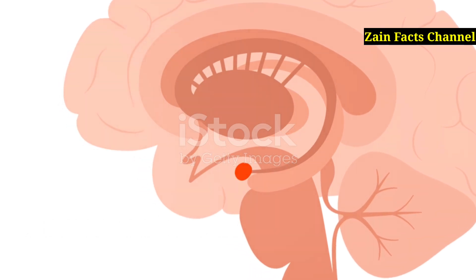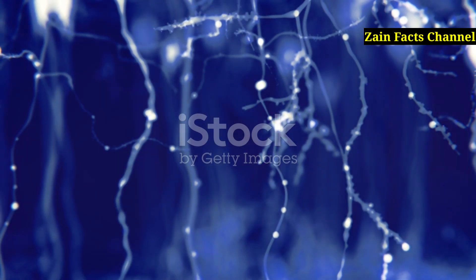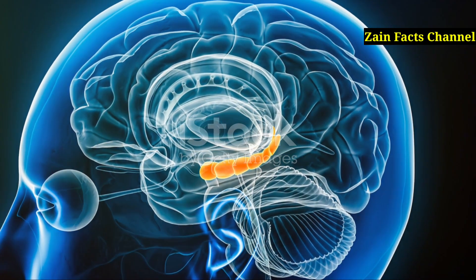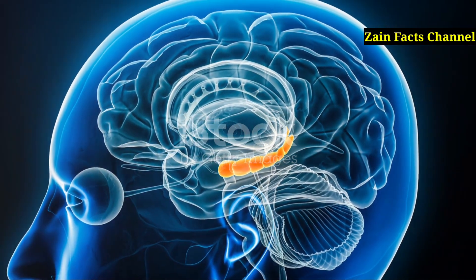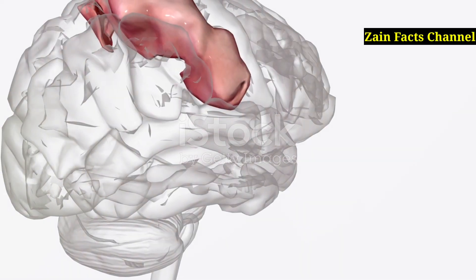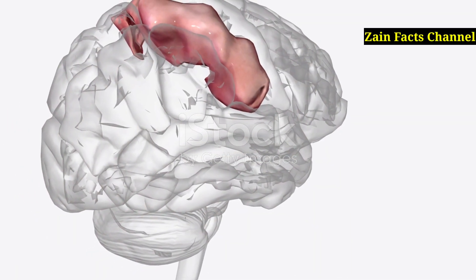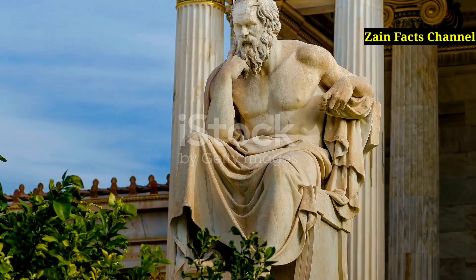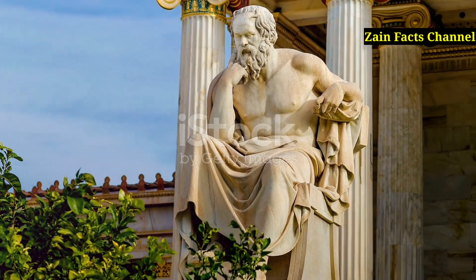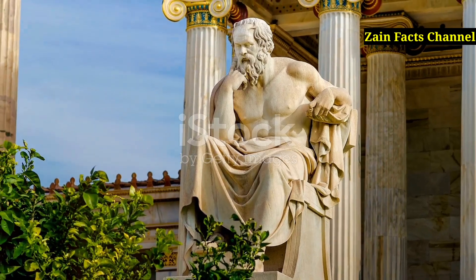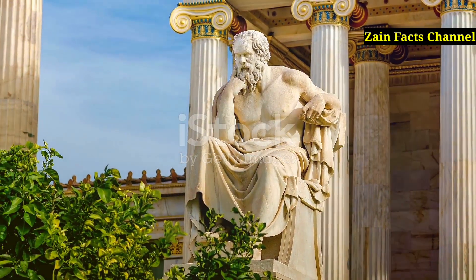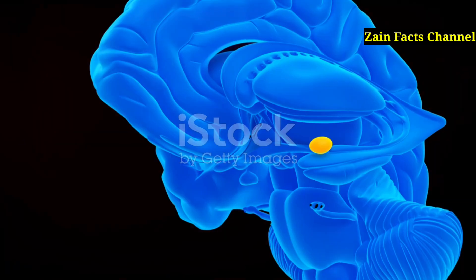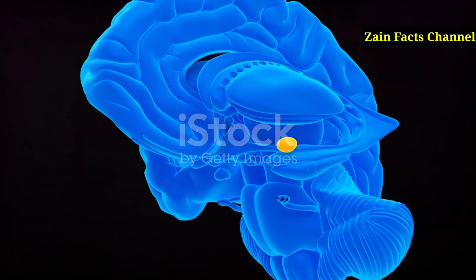Memory and the Brain. The brain's structure and function play crucial roles in memory. The hippocampus is vital for forming new memories, while the amygdala processes emotional memories. The prefrontal cortex is involved in the retrieval and use of memories. Interesting fact: the memory palace technique, used by ancient Greek and Roman orators, involves visualizing a familiar place and associating different locations with items to remember. Emotional experiences are often better remembered due to the amygdala's involvement in processing emotions.